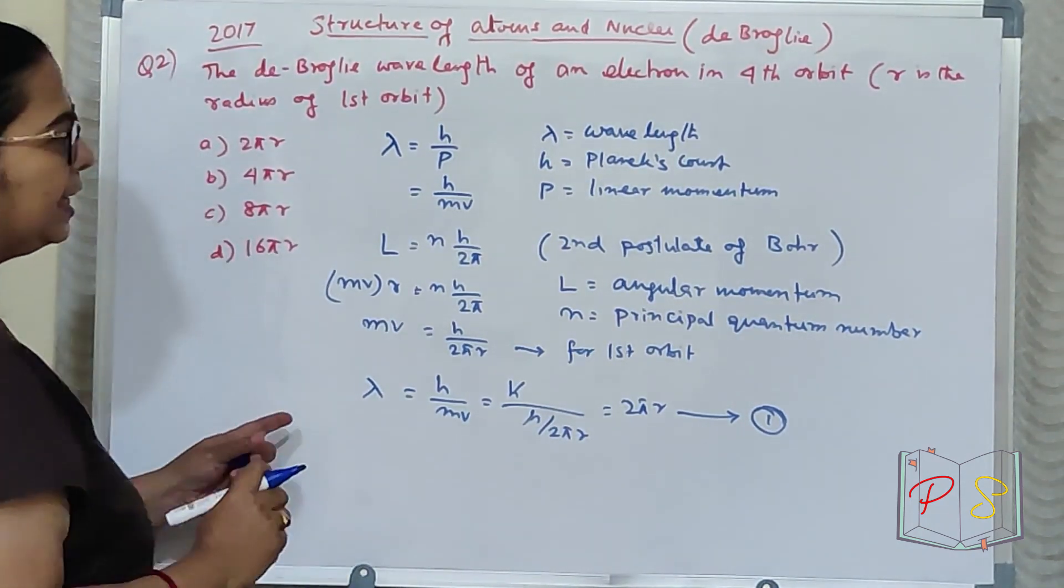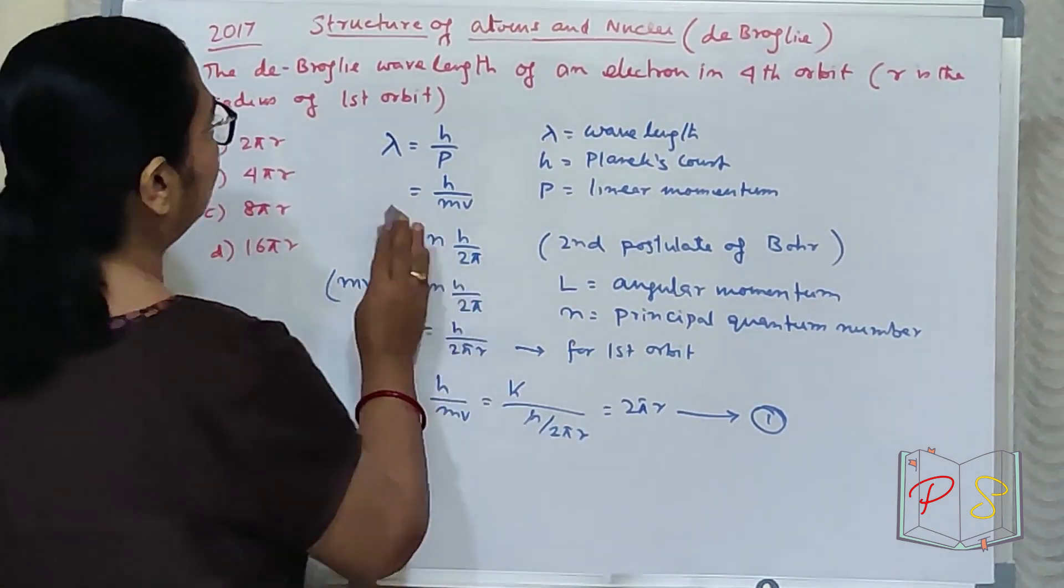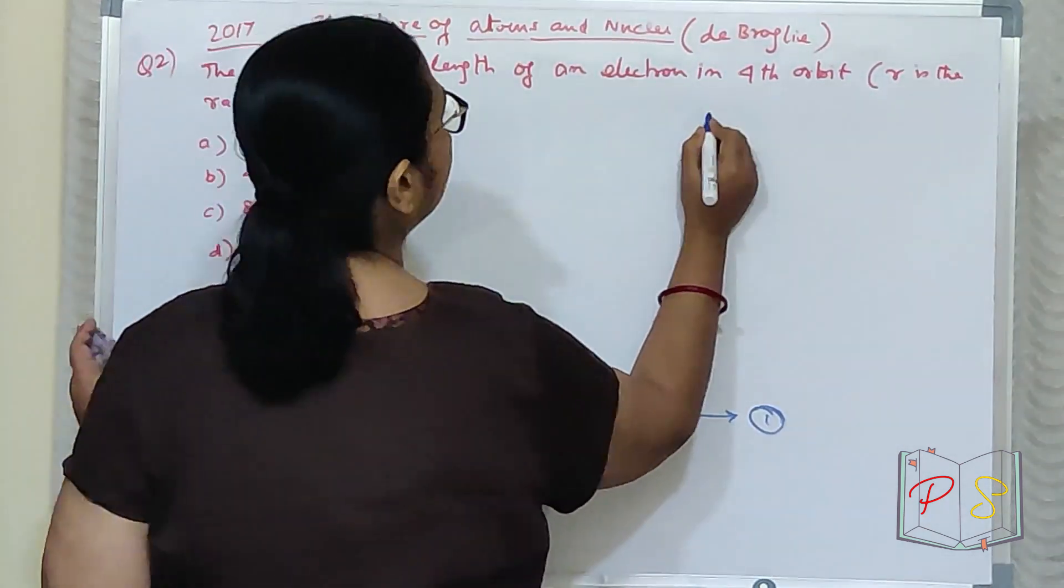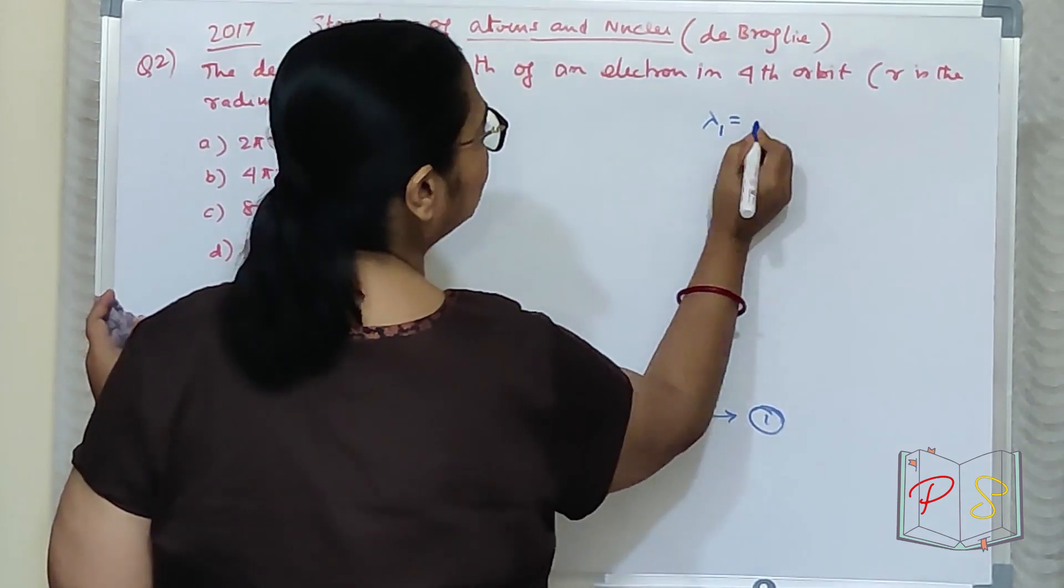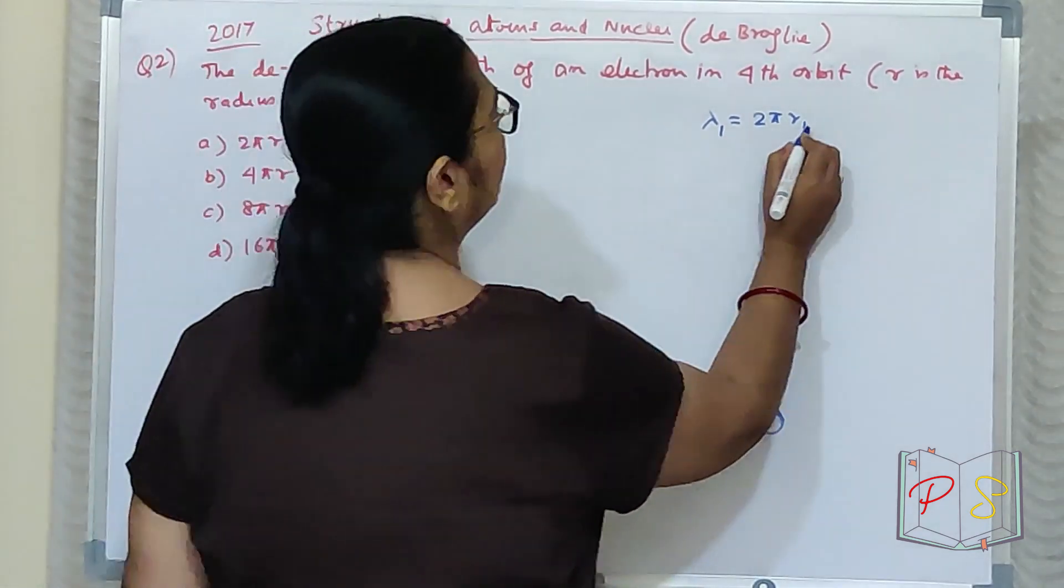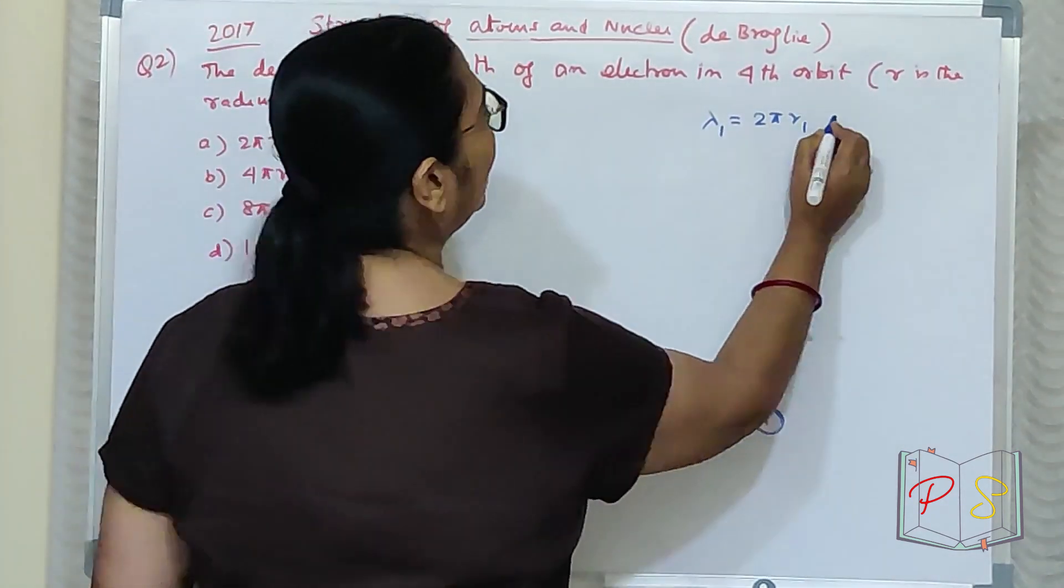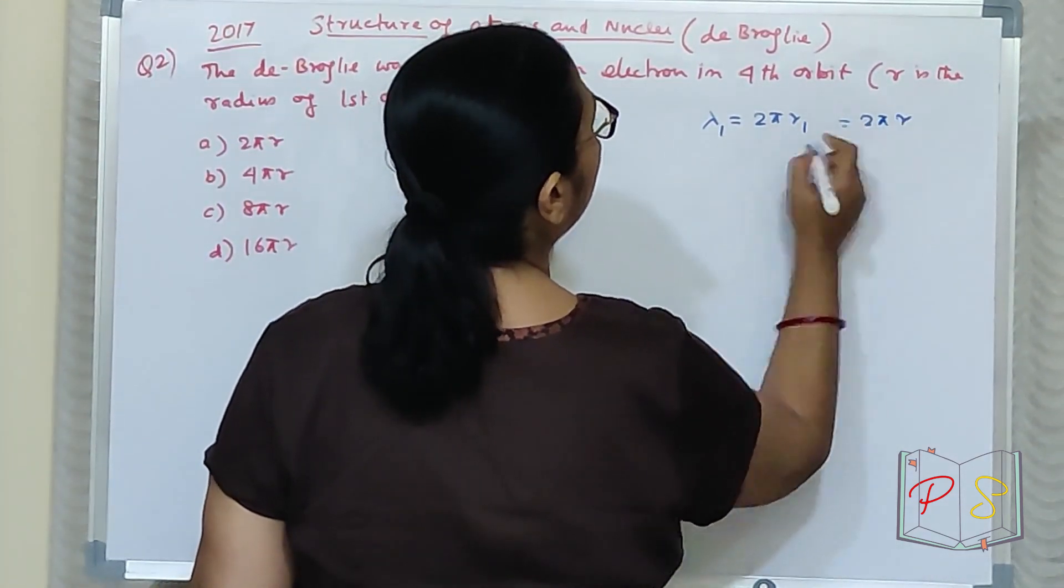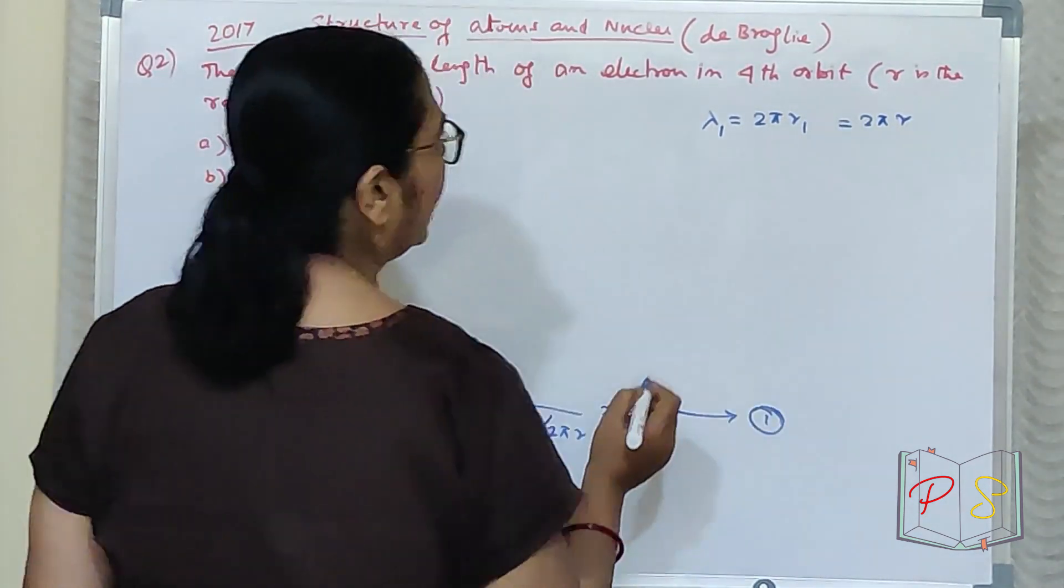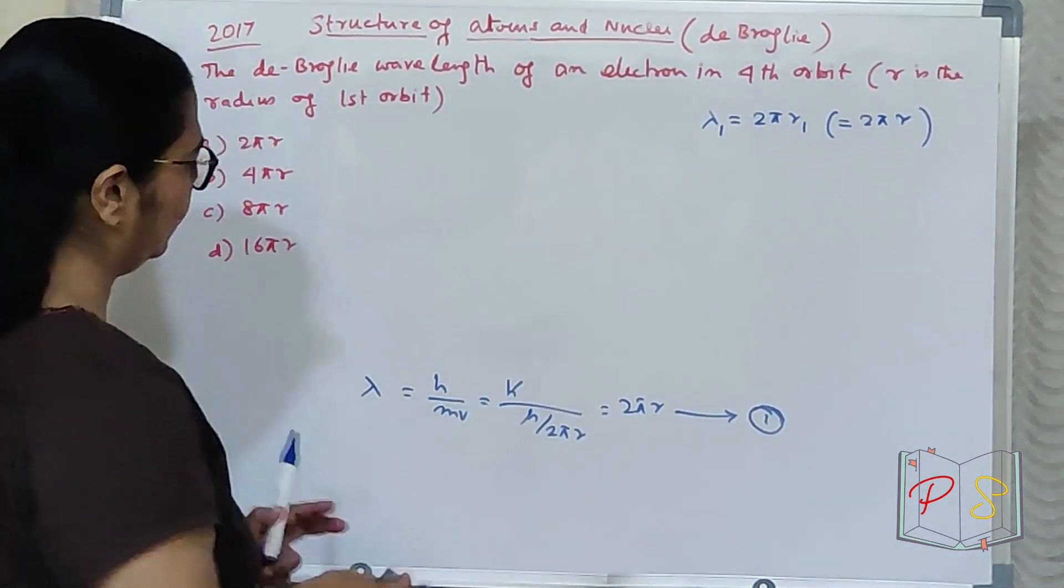We need the fourth orbit. So let me do it again. Make some space for me. You've noted this. You've understood. Lambda for the first orbit is 2πr₁. Let me write first orbit as r₁. You're given r. Later I'll make it 2πr. For now I've written r₁, Lambda₁, so r₁.